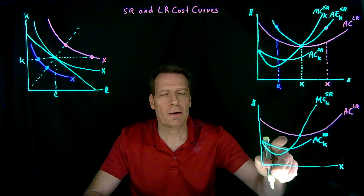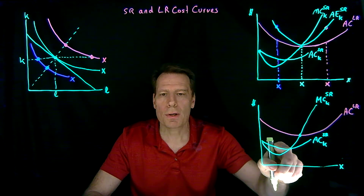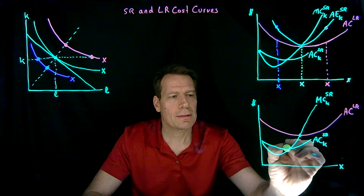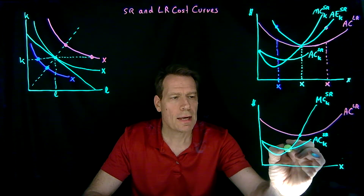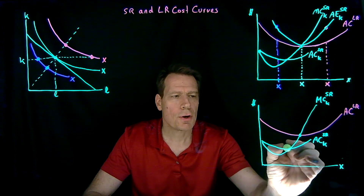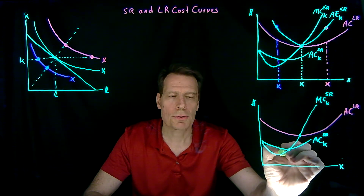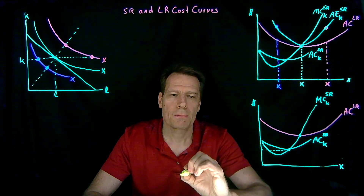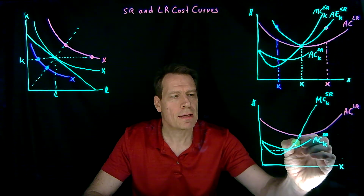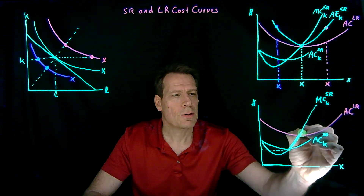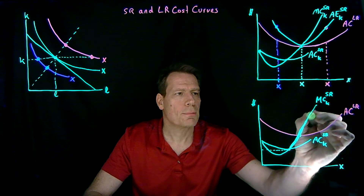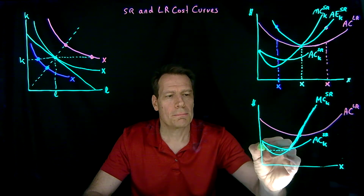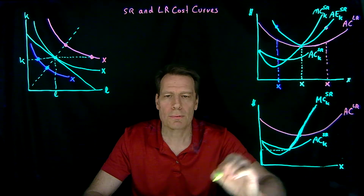Now we have enough information to identify where the short-run supply curve lies. We know that the break-even price in the short run happens at the lowest point of the average cost curve where it crosses the marginal cost curve. So this is our break-even price in the short run. At any price above that, the supply curve lies right on top of the short-run marginal cost curve. Below that break-even price we wouldn't produce in the short run.